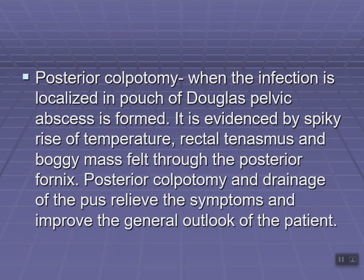Posterior colpotomy is performed when infection is localized in the pouch of Douglas and a pelvic abscess — collection of pus — is formed. This is evidenced by a spiky rise of temperature, rectal tenesmus, and a boggy swelling through the lateral fornix. In that case, a posterior colpotomy and drainage of the pus is done, so that it will help to relieve symptoms and improve the general outlook of the patient.